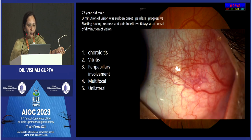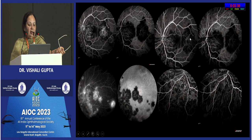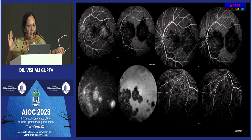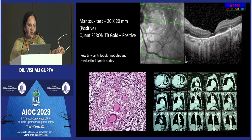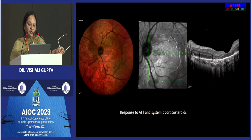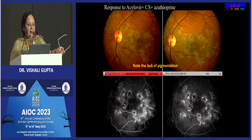This presentation of serpiginous-like chorioretinitis should always lead you to rule out infection, most commonly tuberculosis. In this patient, Mantoux was 20×20, quantiferon was positive, and CT was done. Even if one or two tests are positive with the clinical phenotype, it is good to start treatment. These patients respond to anti-TB treatment. I will now go to my algorithm.